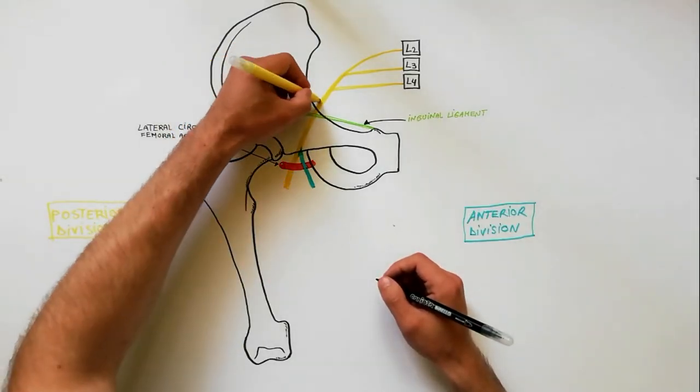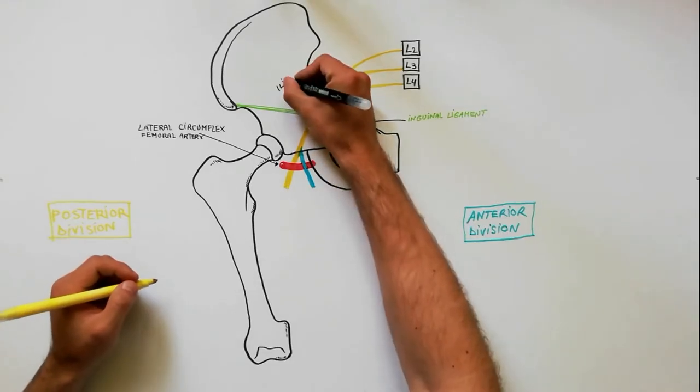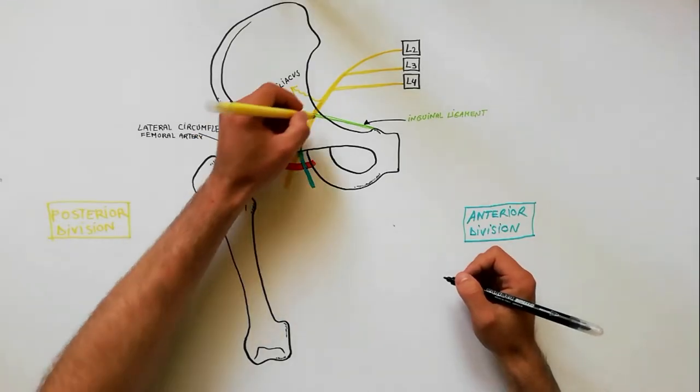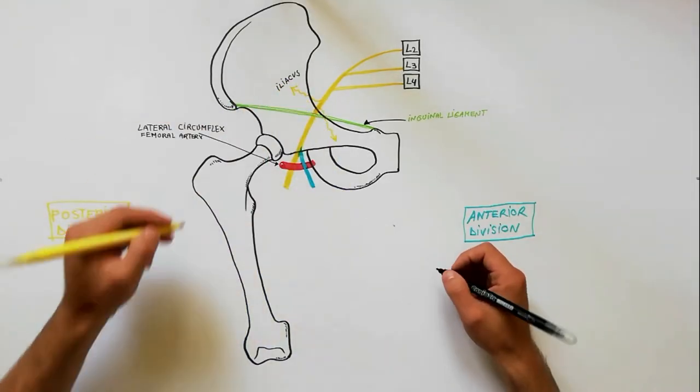Before passing posterior to the inguinal ligament, it gives off a branch to the iliacus muscle and a branch to the pectineus muscle.